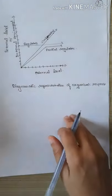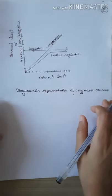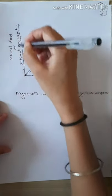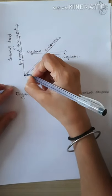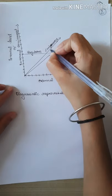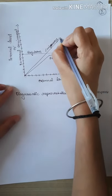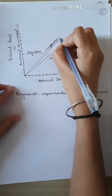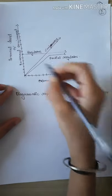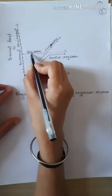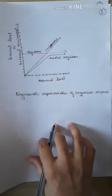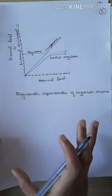Agar hum regulators aur conformers ko graphically represent karein — x-axis pe external level yaani external environment rakhen aur y-axis pe internal environment — to aap dekh saktate hain: conformers ke liye jaise jaise external environment change ho raha hai, waise waise unka internal environment bhi badal raha hai — jaise reptiles, amphibians, ya mostly plants. Aur regulators — jaise sare mammals — unmen external environment kitna bhi change ho raha ho, lekin unke internal environment mein koi change nahi hai — woh bilkul constant, linear rehta hai. Yeh diagrammatic representation hai jisse hum dekh sakte hain ki kaise organisms respond karte hain conformers aur regulators bante hain.